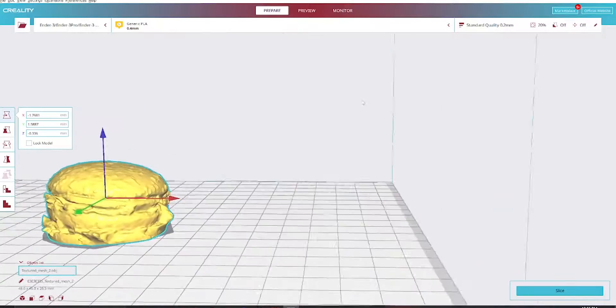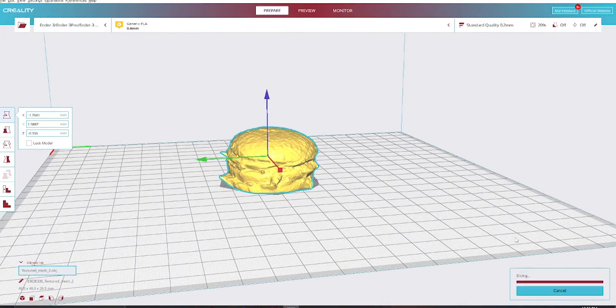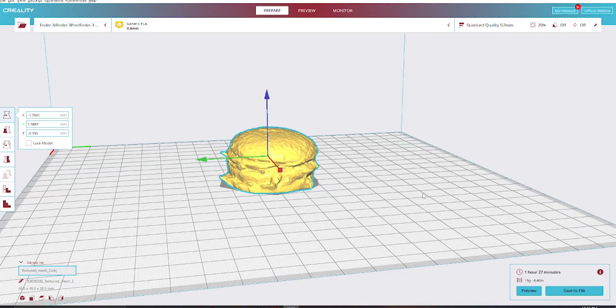Now that I got it exported to Creality Slicer, all I'm going to do is go ahead and slice it. Now that it's sliced, as you can see it's going to take about an hour and a half to print, and I'm going to go ahead and export this to my 3D printer.